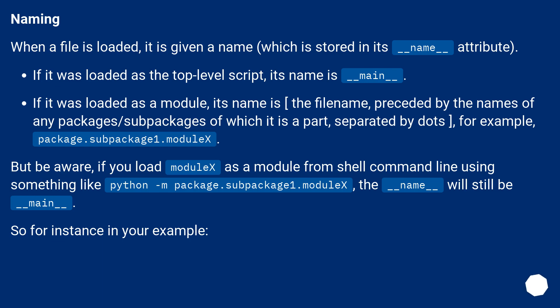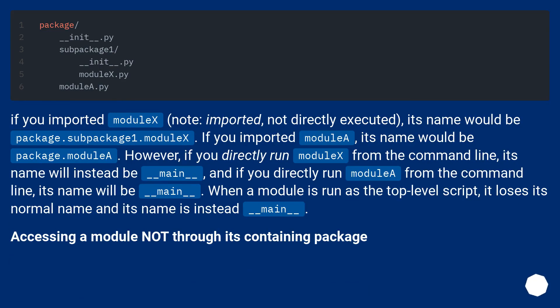When a file is loaded, it is given a name stored in its __name__ attribute. If loaded as the top-level script, its name is __main__. If loaded as a module, its name is the filename preceded by the names of any packages it is part of, separated by dots — for example, package.subpackage1.moduleX. Be aware: if you run module X as a module from the command line using 'python -m package.subpackage1.moduleX', __name__ will still be __main__.